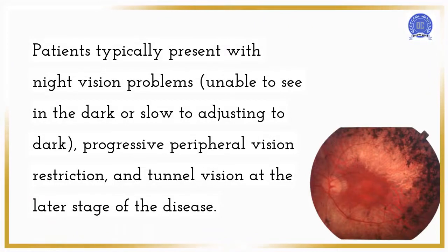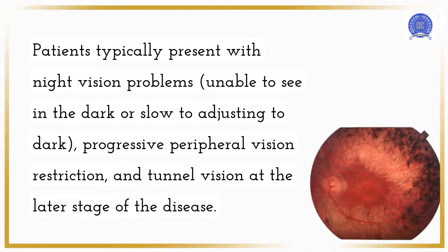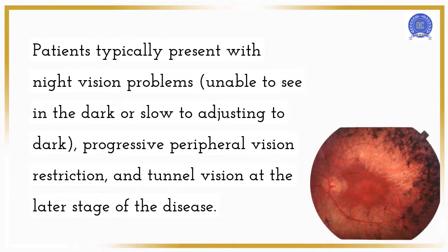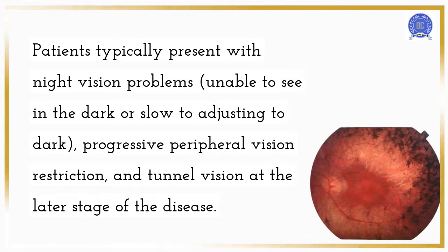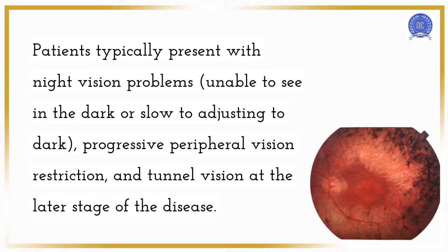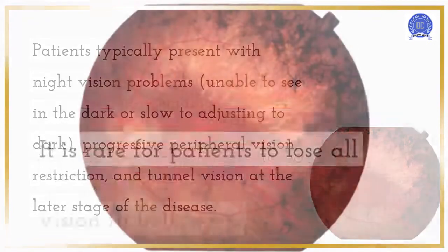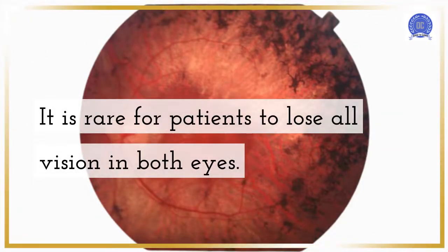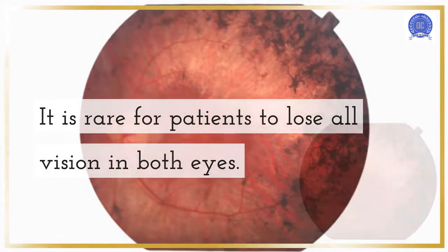Patients typically present with night vision problems — unable to see in the dark or slow to adjust to dark — progressive peripheral vision restriction, and tunnel vision at the later stage of the disease. It is rare for patients to lose all vision in both eyes.